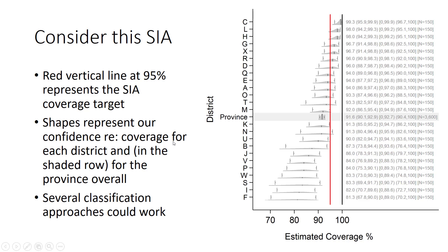The shapes represent our confidence about coverage for each stratum. Now if we think about classifying coverage, we could do it in several ways. The following figures will show the same shapes, but we'll color them differently depending on our classification scheme.